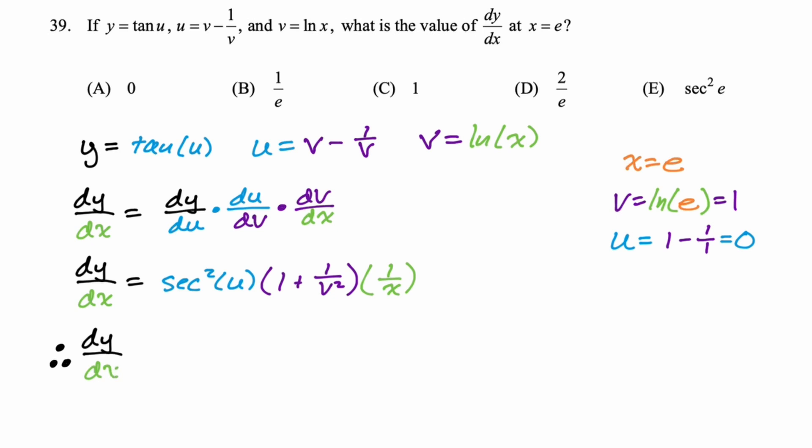dy/dx is going to be sec²(0), 1 + 1/1², which is 1, and then 1/e. So just direct substitutions. Cosine of 0 is 1, so secant is also 1. So if we square it, we just get 1. So we have 1 times 2, 1/e. So 2/e is our final answer, and we pick it.